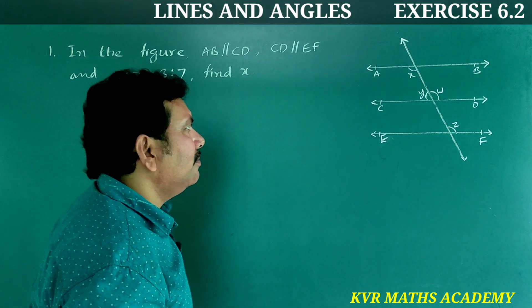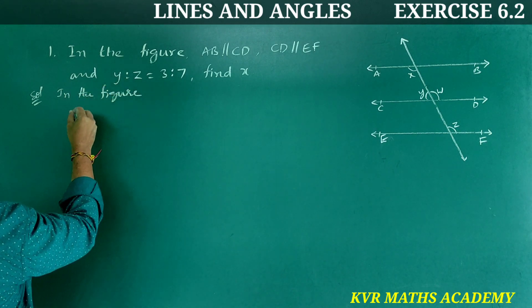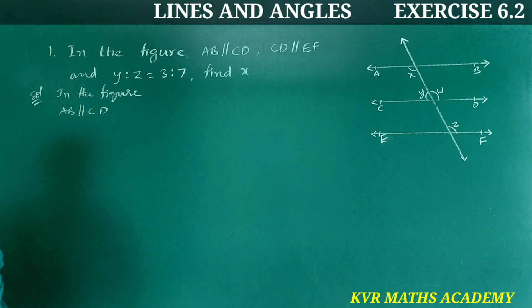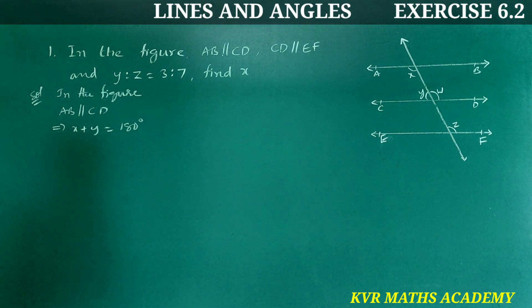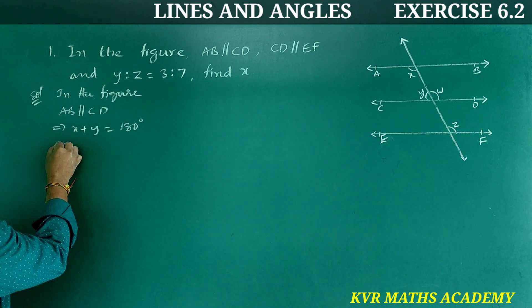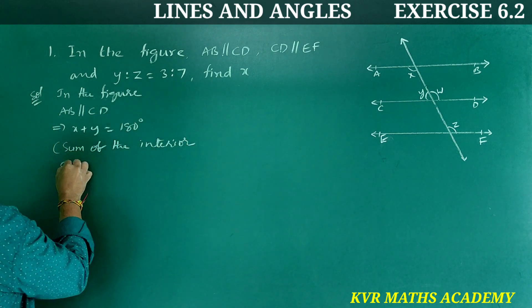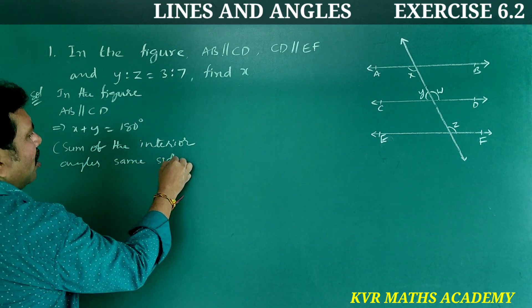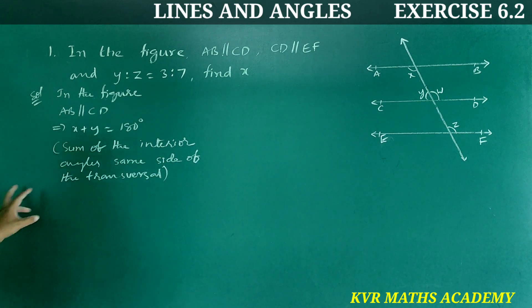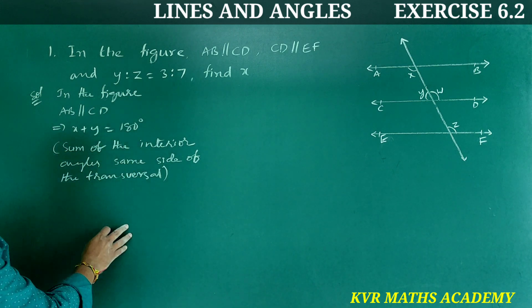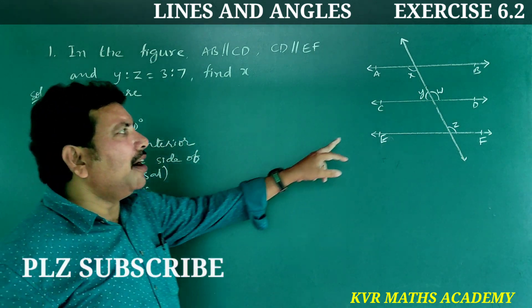Solution: Since AB is parallel to CD, that implies X plus Y is equal to 180 degrees. In the same way, Y plus W is equal to 180 degrees.